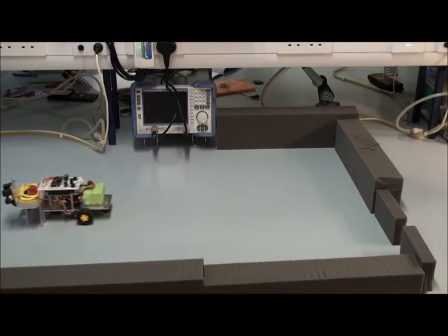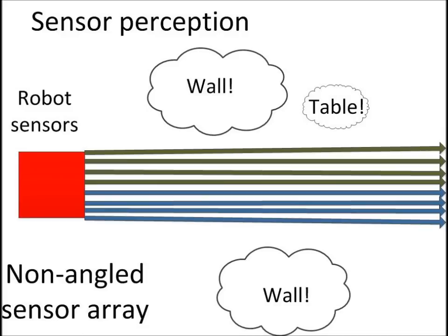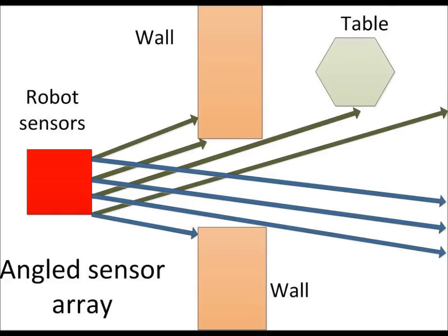Mounting sensors directly in the direction of travel only provides range to obstacles immediately in front of the robot, no peripheral vision so to speak. If we mount sensors in an angled and crossed array, obstacles which were hidden become detectable and more defined in shape.